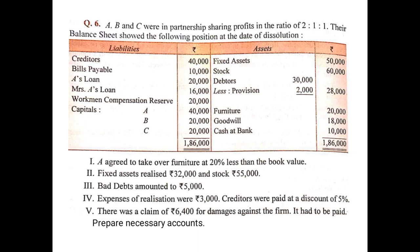Then bad debts amounted to Rs. 5,000. That means from debtors of 30,000, 5,000 could not be recovered, so the remaining 25,000 has been recovered. This is also asset realized, shown on the credit side of the realization account: by bank (debtors realized) 25,000 — that is after deducting the bad debts amount.